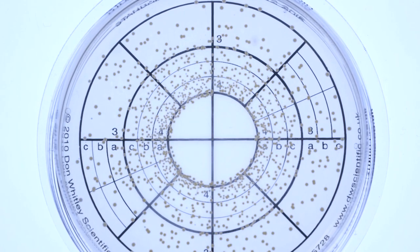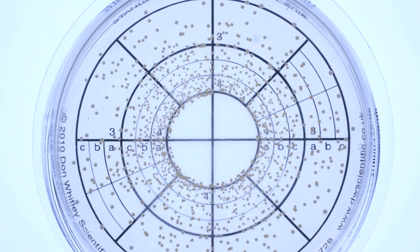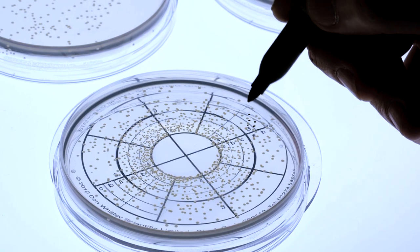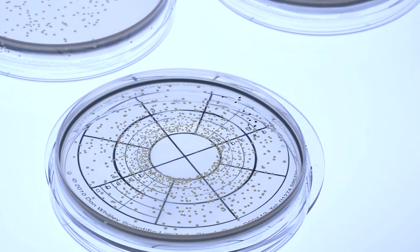The process of counting colonies on spiral plates is often quicker and more accurate than reading conventional spread plates or pour plates. Only sectors of the plate that have discrete colonies need to be read.